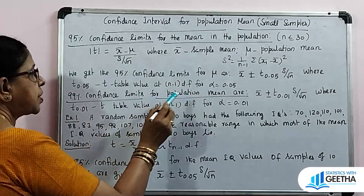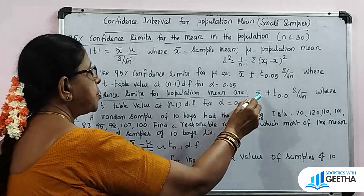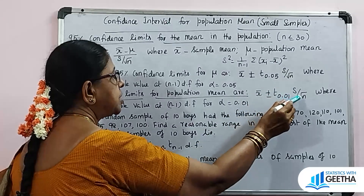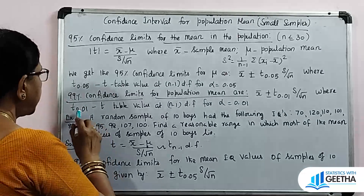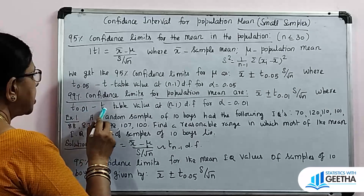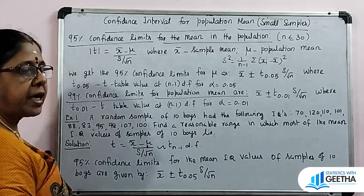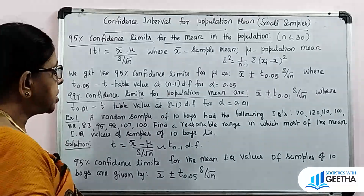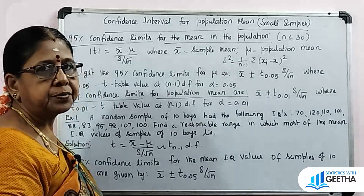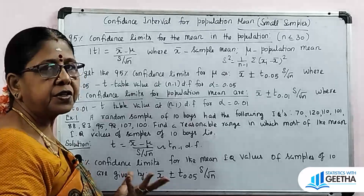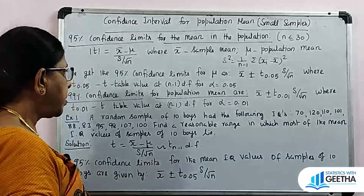For the 99% confidence limits, the formula is X̄ plus or minus T at 0.01 into S by root n, where T at 0.01 is the T table value at n minus 1 degrees of freedom for alpha equal to 0.01.